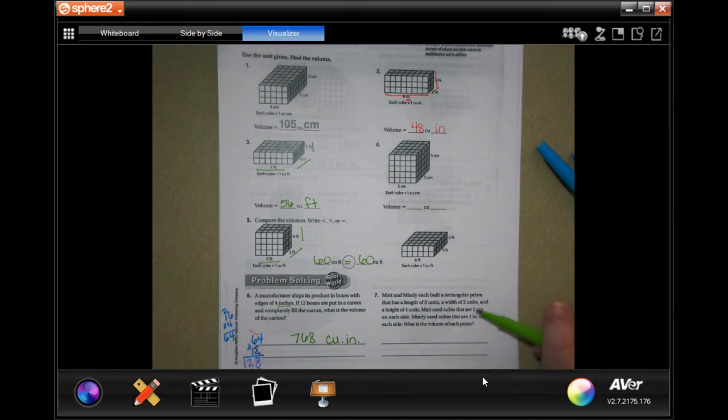Matt and Mindy each build a rectangular prism that has a length of 5, a width of 2, and a height of 4. Matt uses cubes that are 1 centimeter on each side. Mindy uses cubes that are 1 inch on each side. What is the volume of each prism?